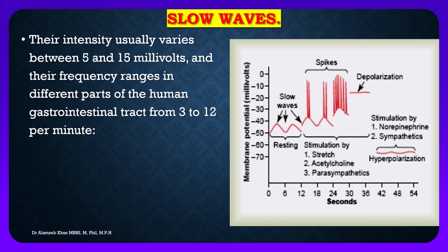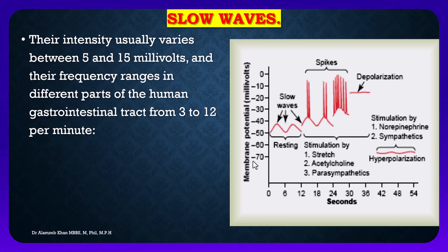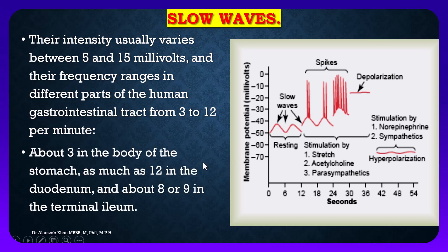The intensity of slow waves usually varies between 5 and 15 millivolts. Their frequency ranges in different parts of the gastrointestinal tract from 3 to 12 per minute — about 3 per minute in the body of the stomach, as many as 12 in the duodenum, and about 8 or 9 in the terminal ileum.